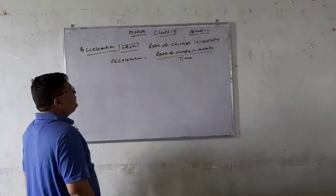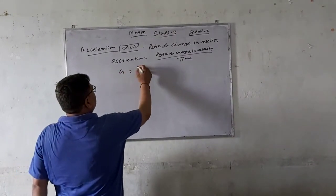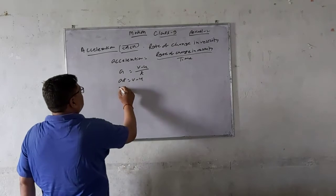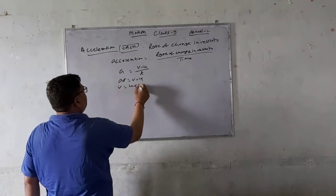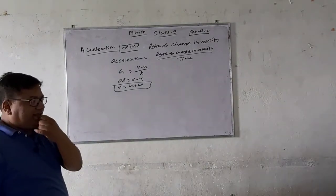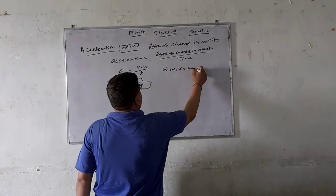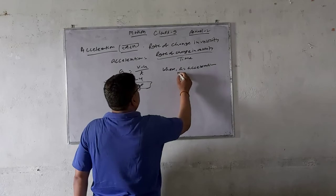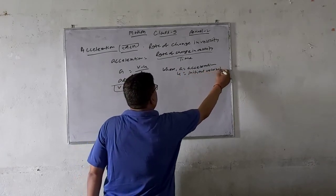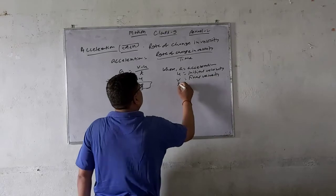If I write it, then acceleration A equals to the rate of change in velocity, that is V minus U upon T. From this, V minus U equals AT, or V equals U plus AT. This gives us the formula V equals U plus AT, where A is acceleration, U is initial velocity (initial means starting value), V is final velocity, and T is time.